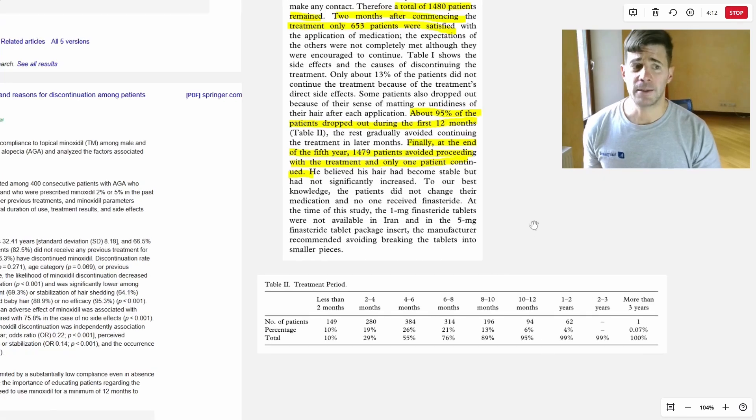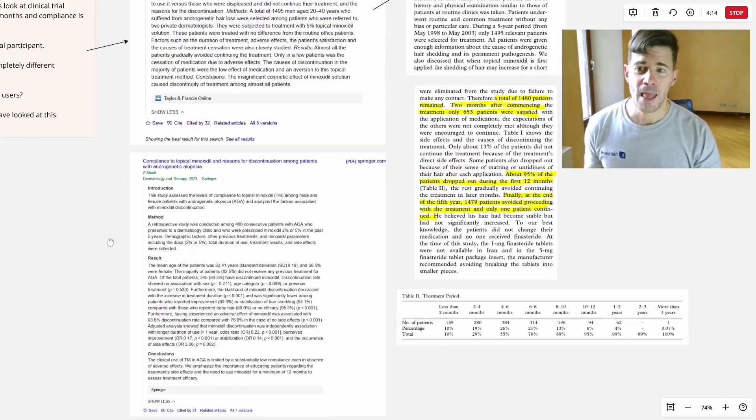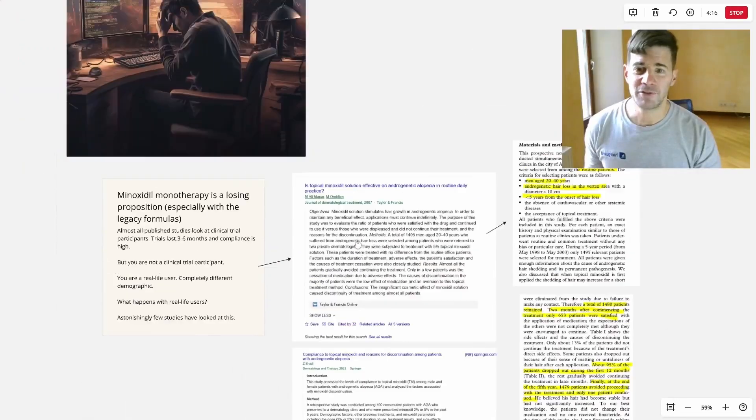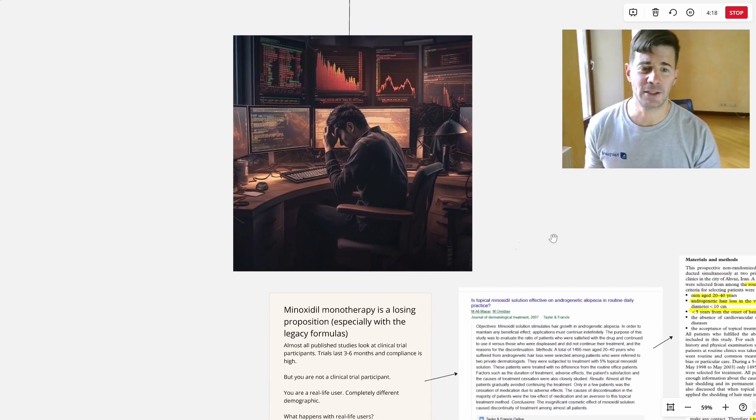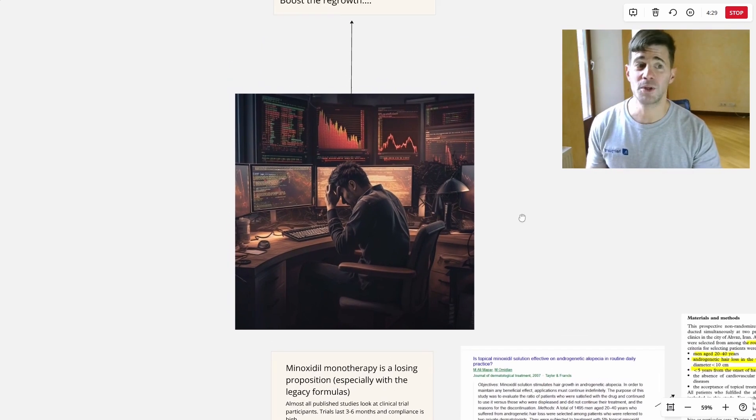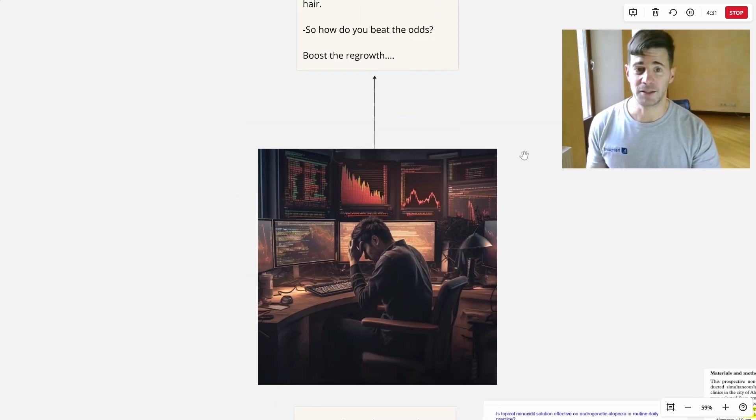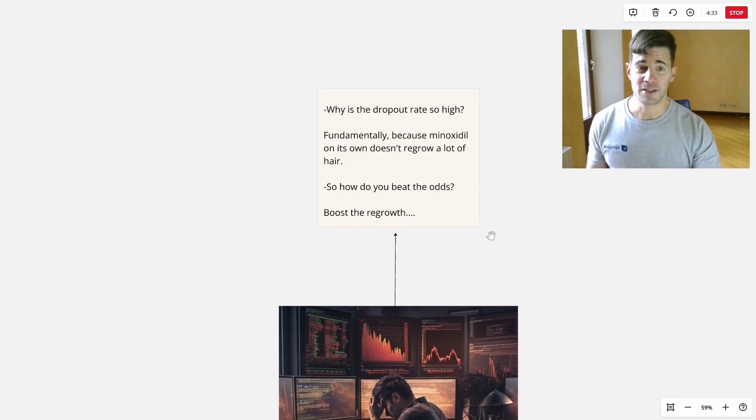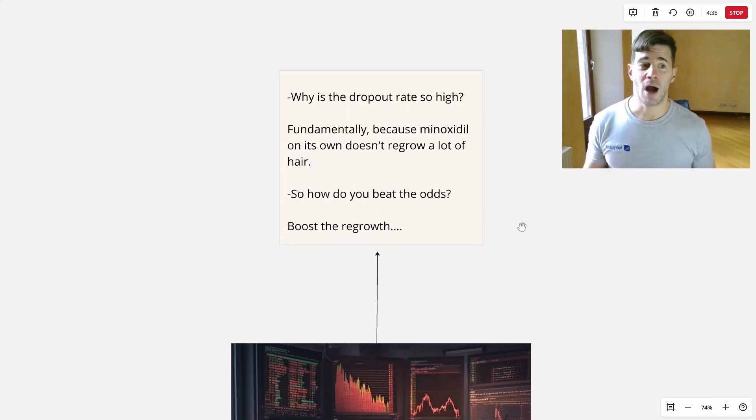I used to dabble a bit in forex, currency speculation. And in forex, there's this common figure you'll have thrown around that 95% of people that get involved with forex lose money. So it's a losing game. And this always reminds me of minoxidil. And the question is, why is the dropout rate so high? Why did 95% of men quit?